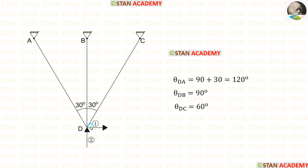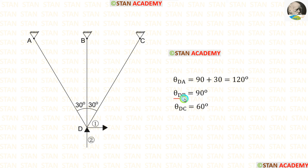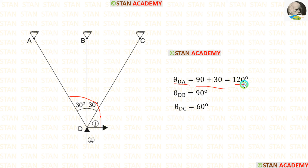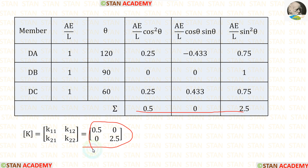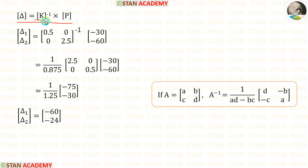Now let us calculate the angles. For theta DC: we take the angle 90 minus 30, giving 60 degrees. For theta DB: this angle is 90 degrees. For theta DA: the angle is 90 plus 30, giving 120 degrees. Since AE/L equals 1, we apply the theta values, compute the table entries, and form the stiffness matrix. Applying the K matrix and P matrix values, we calculate delta 1 and delta 2.